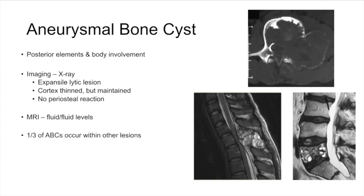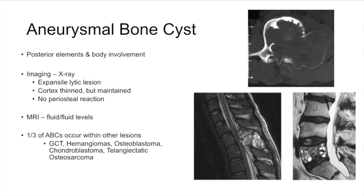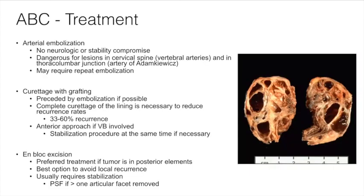Other differentials to consider with ABCs include hemangiomas, osteoblastomas, chondroblastomas, telangiectatic osteosarcoma, angiosarcoma, and giant cell tumors. Many are treated non-operatively with arterial embolization for patients without neurologic symptoms or instability. Operative management is indicated for pain resistant to embolization, mechanical instability, or neurologic deficits. Similar to the extremities, treatment is curettage, but recurrence rates are high; recent work advocates for en bloc resection to minimize recurrence.